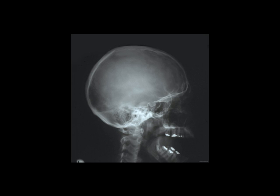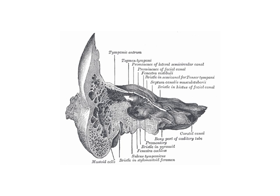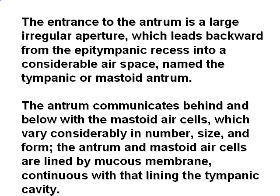An X-ray showing a lateral view of the skull demonstrates the mastoid air cell complex communicating with the middle ear via the mastoid aditus to the antrum. The mastoid antrum, which is a single large air cell behind the epitympanic area, communicates with it via the aditus. The antrum communicates behind and below with the mastoid air cells, which vary considerably in number, size, and form.